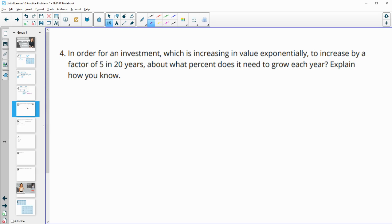Number four, in order for an investment, which is increasing in value exponentially, to increase by a factor of 5 in 20 years, about what percent does it need to grow each year? So it needs to grow by a factor of 5 in that 20 years. So then we need to figure out X to the 20th power to equal 5. So what would we bring to the 20th power to equal 5? So that's basically splitting a factor of 5 into 20 equal parts. So 5 to the 1/20th power.